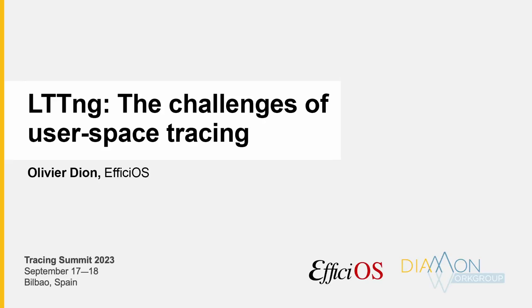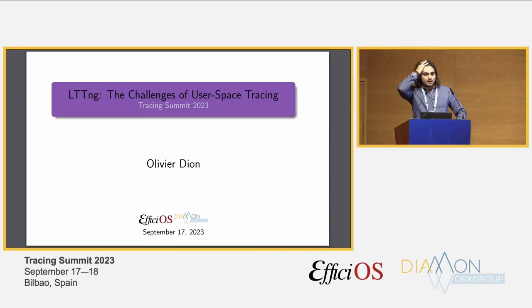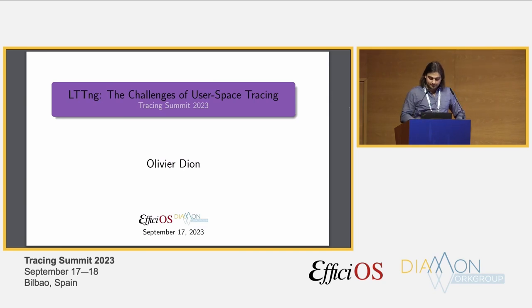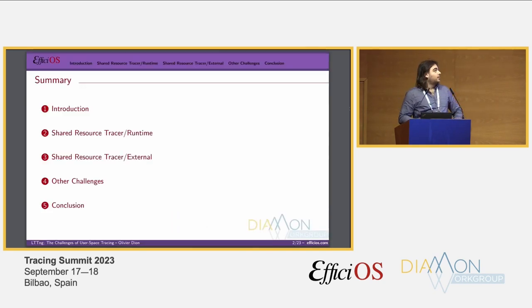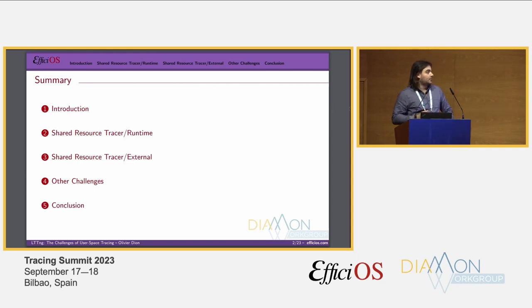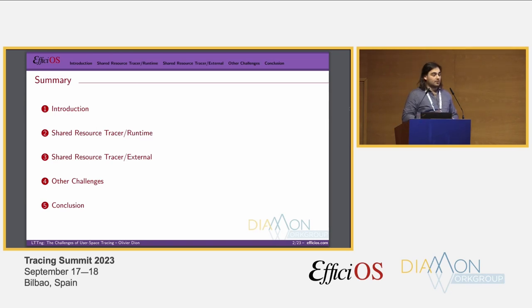Hi everyone, my name is Olivier Dion, I work at Efficias, and today we'll be talking about the challenge of implementing a user space tracer, more specifically about the challenges we have encountered in LTTNG. Here's a summary: I will briefly introduce some definitions around these challenges, then speak about shared resources between the tracer and the runtime, then shared resources between the tracer and external processes, and finally some other challenges and a conclusion.